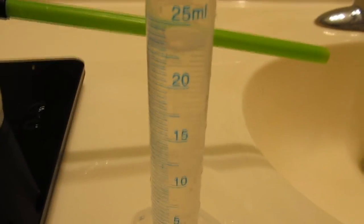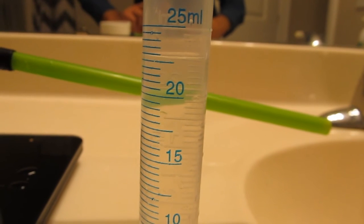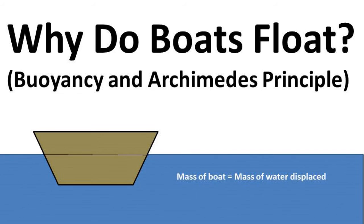Looking at the graduated cylinder runoff, we notice that about 23 milliliters of water got displaced by the clay bubble. Going back to our first slide, this means that the mass of water displaced by the clay bubble is the same as the mass of the clay. The buoyant force equals the weight of the clay of 23 grams.